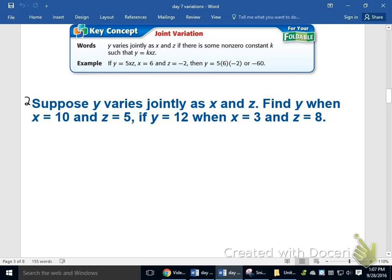So in this problem, suppose y varies jointly as x and z, so that's actually matching our situation. y equals k times x times z. Find y when x equals 10 and z equals 5. Well, tough thing is, I can't do that yet. I need to know what my constant is. That's where this given information is going to come into play.